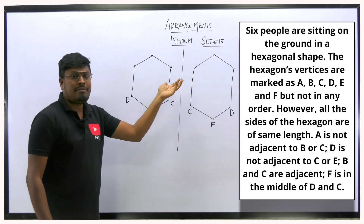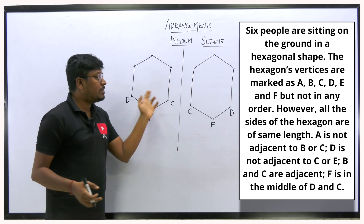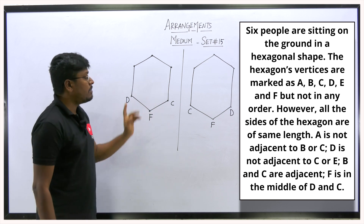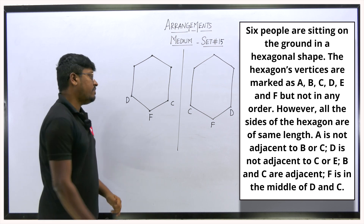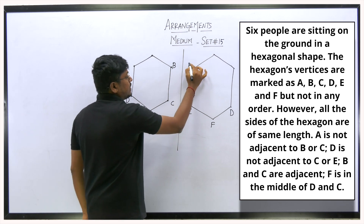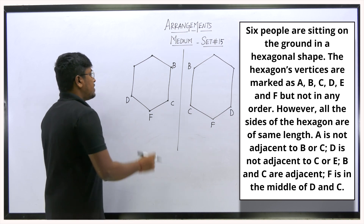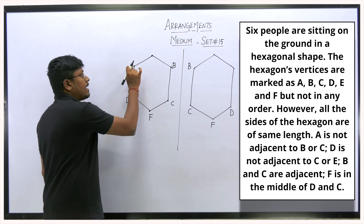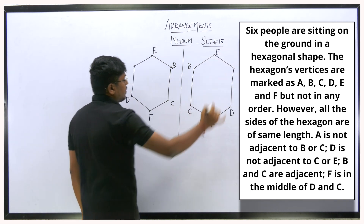You can draw both diagrams, but the questions asked under this passage — like who is sitting opposite to whom — will give the same answer in both cases. F is in the middle of C and D. Since B and C are adjacent neighbors, we fix B next to C. Since D is not adjacent to C and E, we cannot place E next to D — so E goes to the other position.